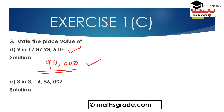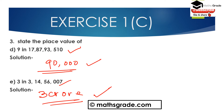Part E: find the place value of 3 in 3,14,56,007. Looking at the number, 3 is in the thousands place. Therefore, the place value of 3 in 3,14,56,007 is 3,000.